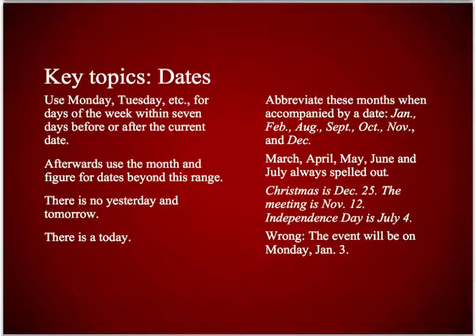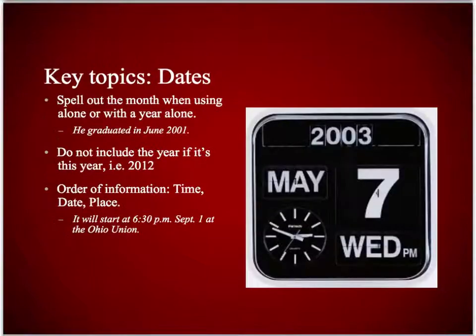Here's some information on dates: which months you abbreviate, whether you use the day and the date, and when you would use yesterday or tomorrow — which is never — but we do use today. We don't want the redundancy of Monday, January 3rd; it's just January 3rd or just Monday, depending on which fits. We also spell out months when used alone or with the year, and this is the order we use: time, date, and place.